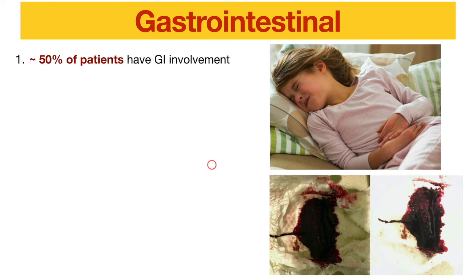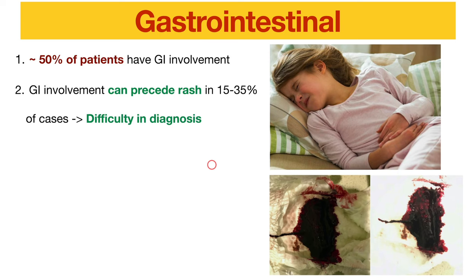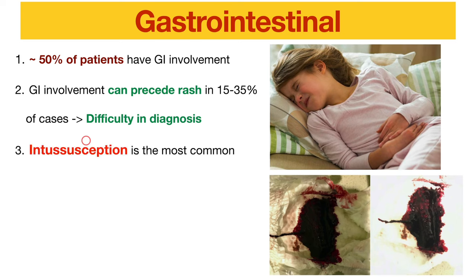50% of patients have GI involvement, and this is quite tricky because GI involvement can happen before the rashes in around 30% of cases, making diagnosis difficult. If a patient has abdominal pain for a few days and then suddenly develops bilateral lower limb petechiae, think about HSP. The most important complication of GI involvement is intussusception.